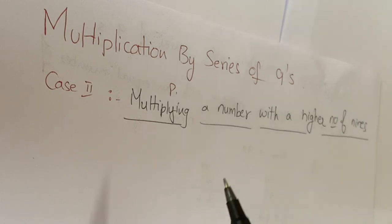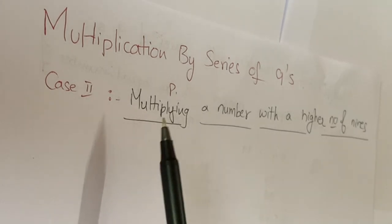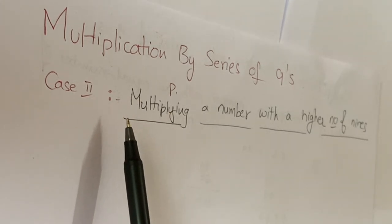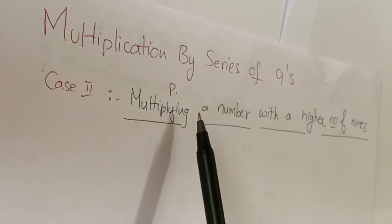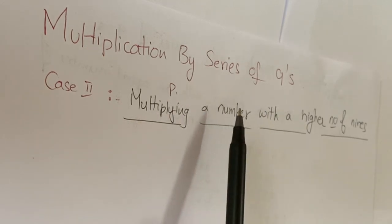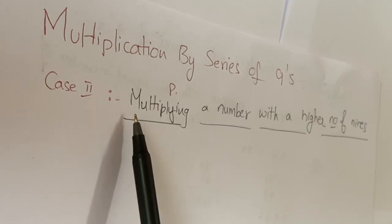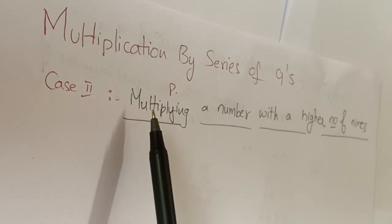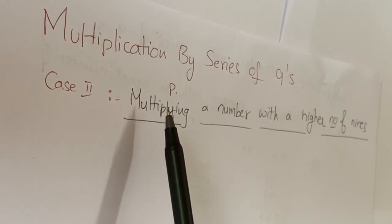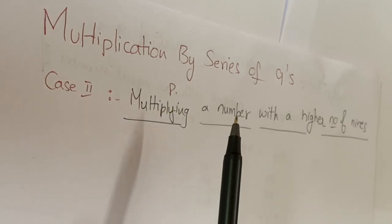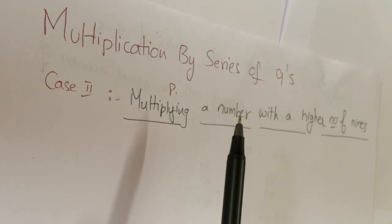In our previous session, we learned multiplication by series of nines by an easy method. In that case, the digits of the multiplicand and the digits of a nine series are the same. If you didn't watch my video, here I give the link so you can click the I button.